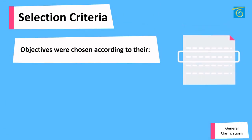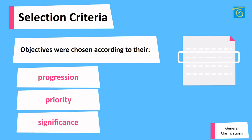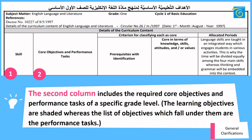Objectives were chosen according to their progression, priority, and significance. The first table is about the core objectives. The first column includes the skills — listening, reading, oral communication, written communication, and thinking. The second column includes the required core objectives and performance tasks of a specific grade level. The learning objectives are shaded, whereas the list of objectives which fall under them are the performance tasks.